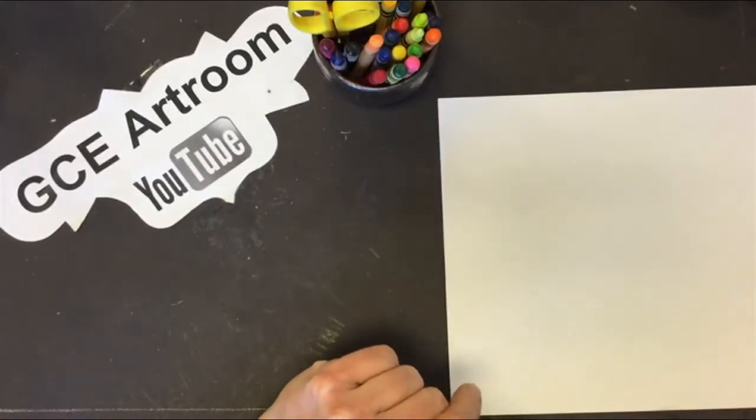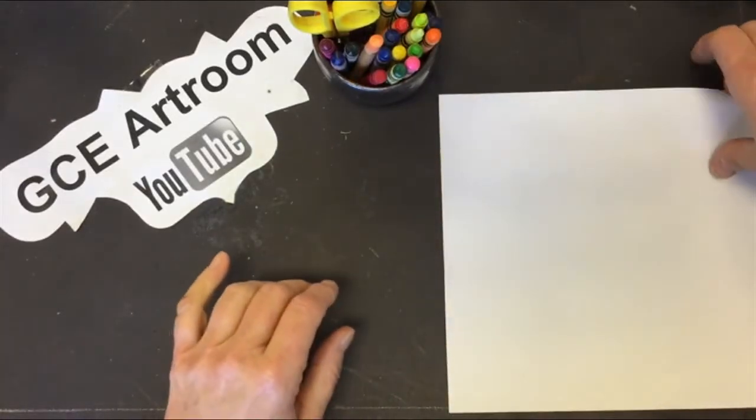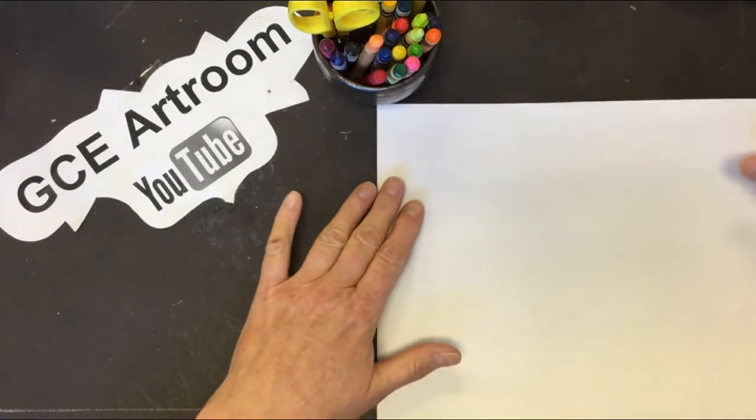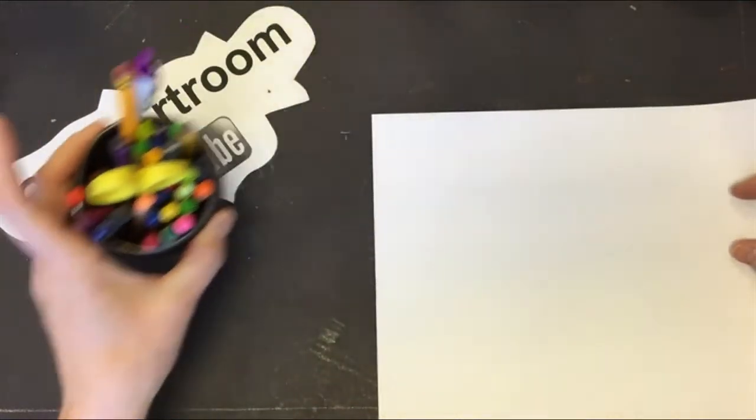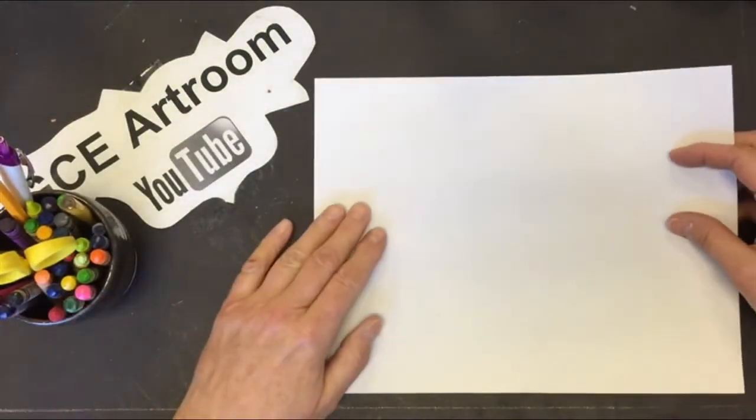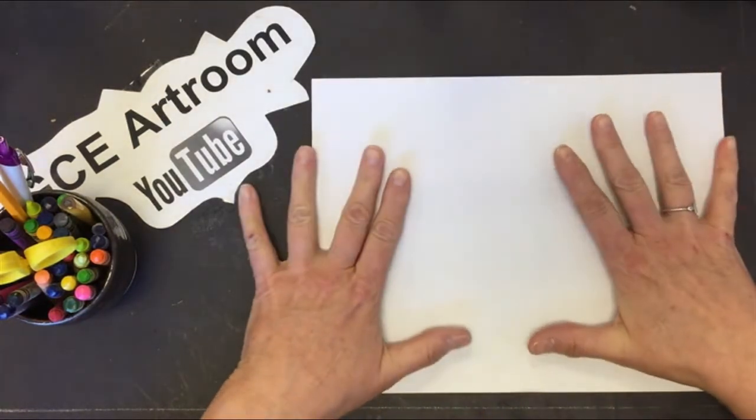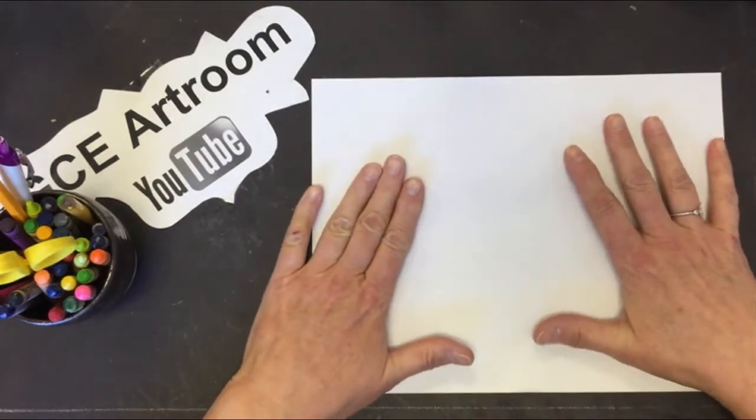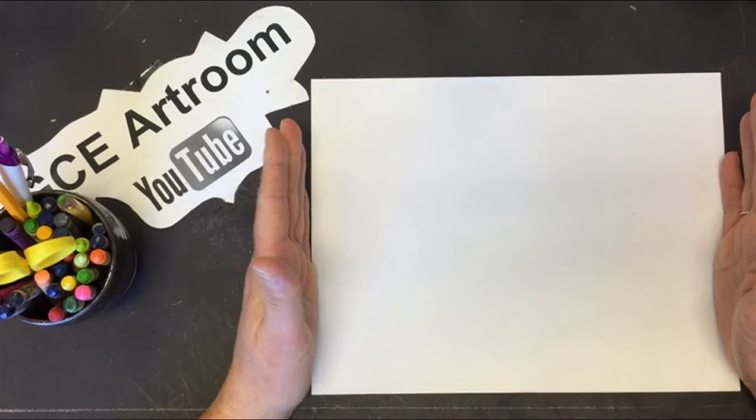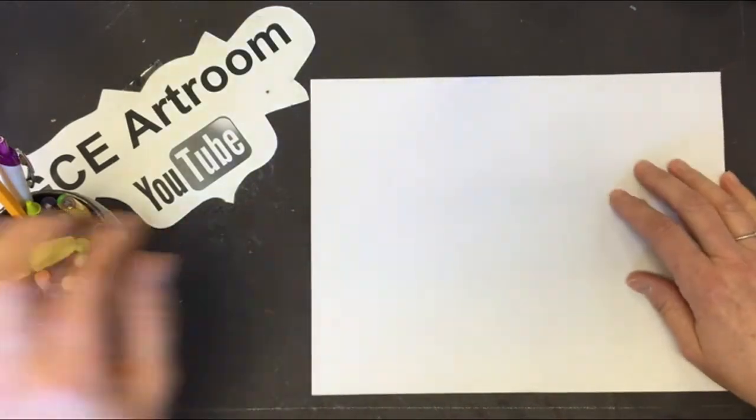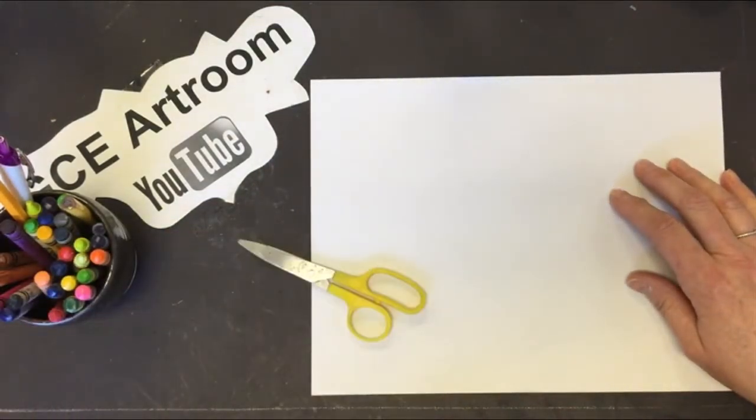All right my friends, so today what we're gonna do is we're going to be making a snowflake. A snowflake? Yes, a snowflake. We're gonna make a snowflake out of a piece of paper. So you're going to need a regular piece of paper just like copy paper that we use and you're going to need your scissors.